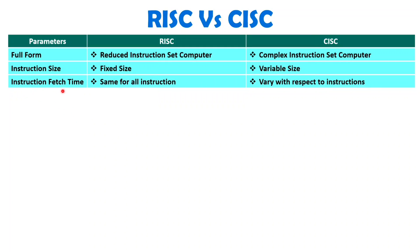Instruction fetch time is also the same for all instructions with RISC, but it varies with respect to the instruction in CISC. If you have a complex instruction, you need more instruction fetch time, and for a simple instruction it will take less time to fetch. So based on instruction complexity, fetch time changes in CISC architecture, while with RISC it is constant for almost all instructions.